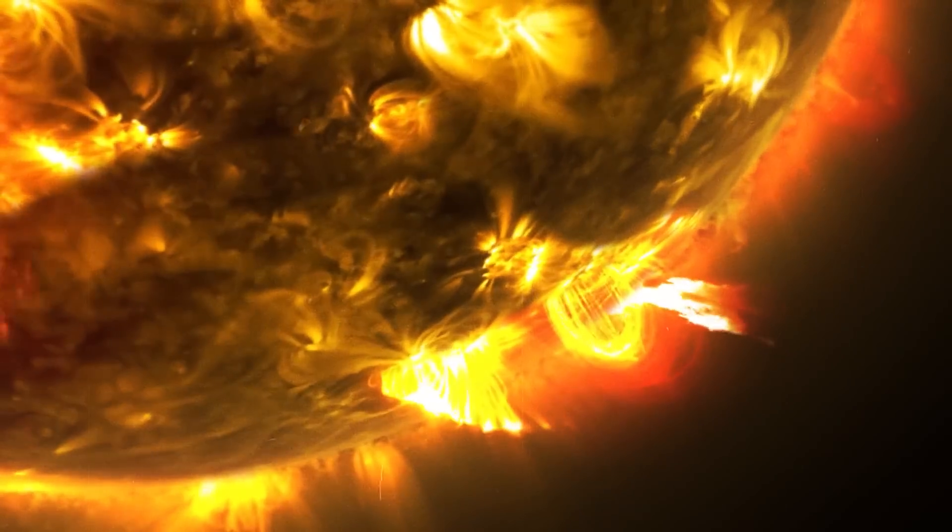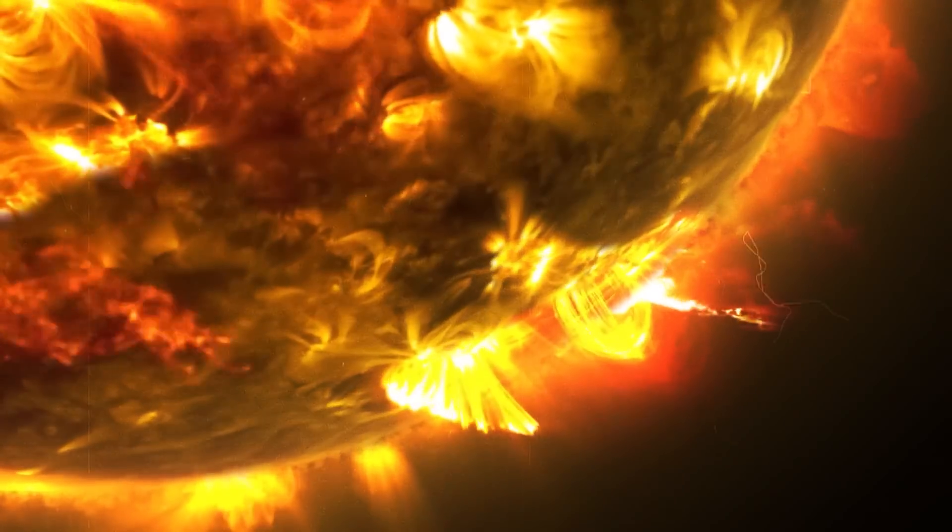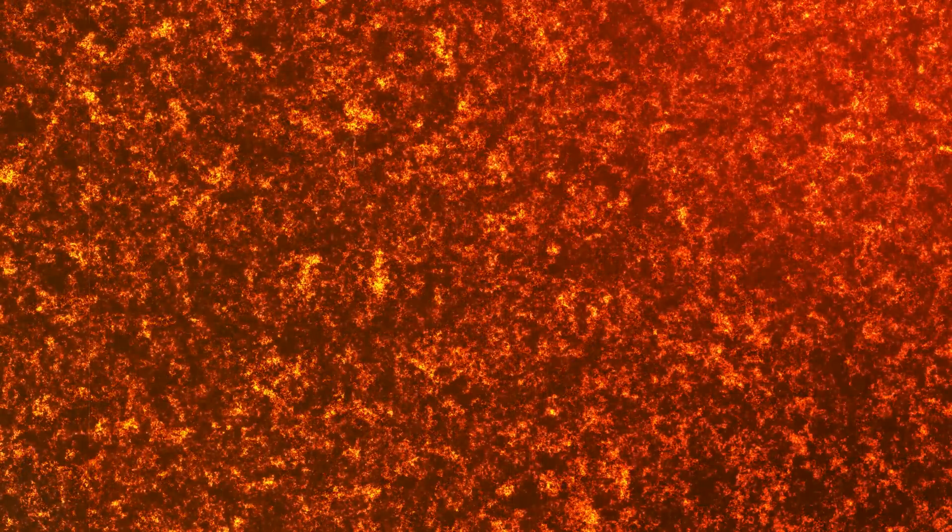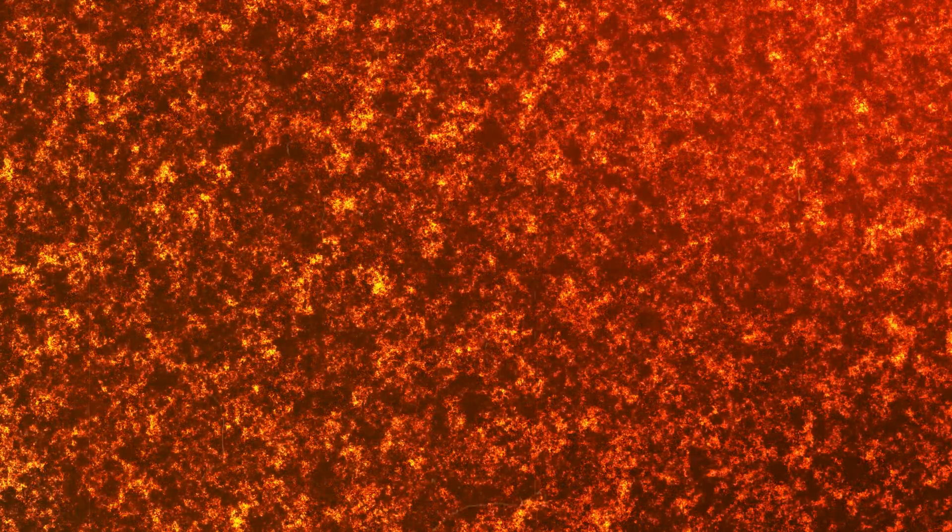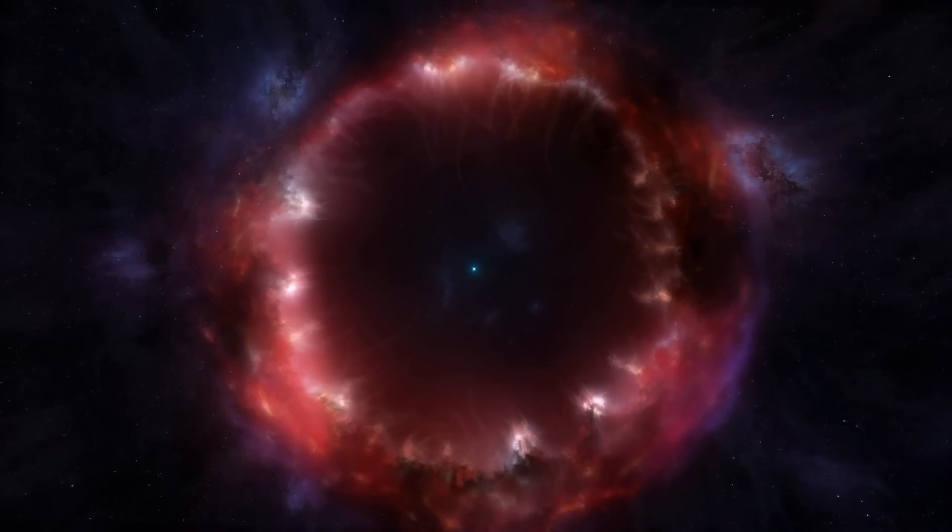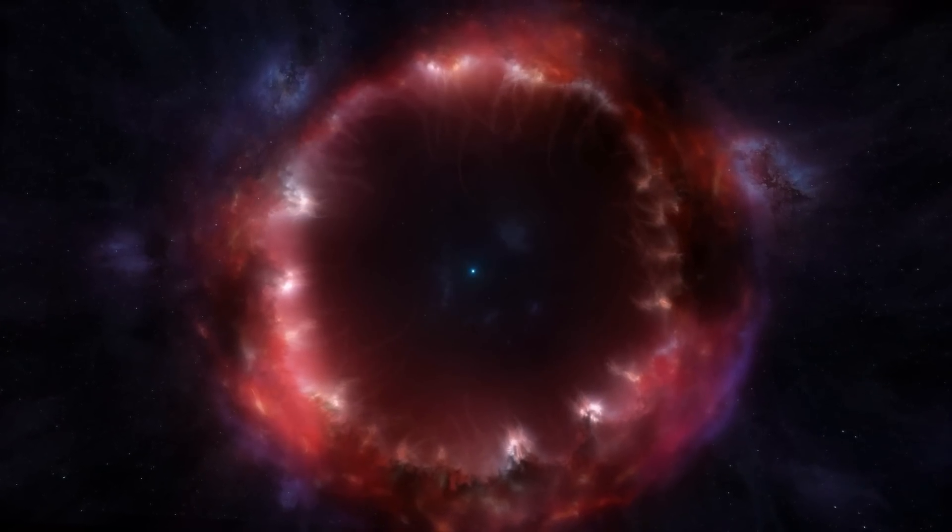This nuclear fusion released enormous amounts of energy, which made the stars shine. Eventually, when the supply of hydrogen ran out, they fused helium into heavier elements such as carbon and oxygen. These processes eventually led to massive supernova explosions that scattered the heavy elements into space, contributing to the formation of new generations of stars.